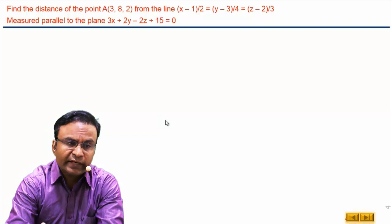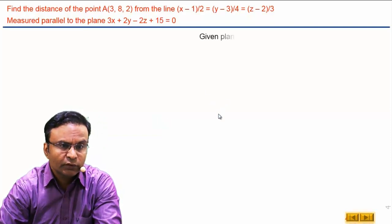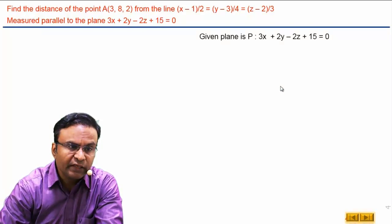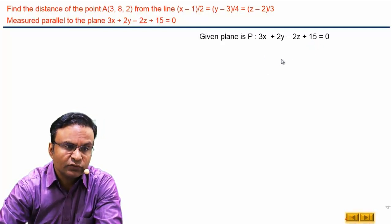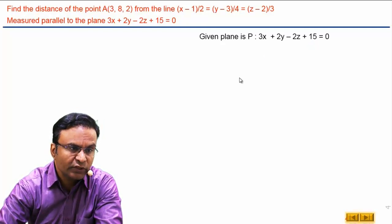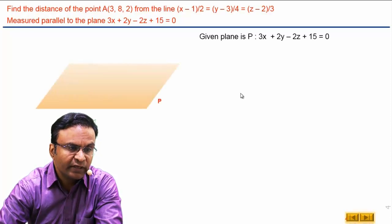Let's draw the diagram for this equation. We have given plane P which is this 3x plus 2y minus 2z plus 15 is equal to 0. Here is plane P.